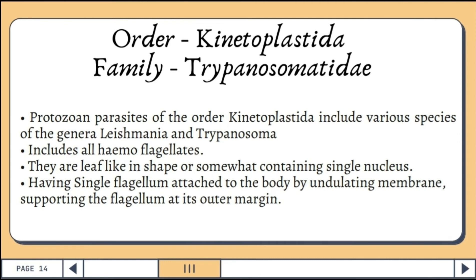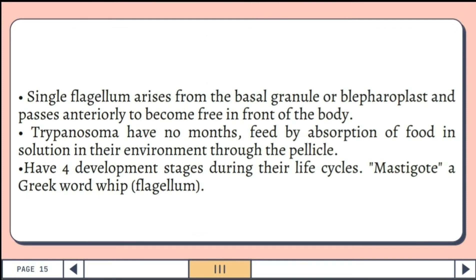Protozoan parasites of the order Kinetoplastida include various species of the genera Leishmania and Trypanosoma. They include all hemoflagellates and are leaf-like in shape, containing a single nucleus. They have a single flagellum attached to the body by an undulating membrane. The single flagellum arises from the basal granule and passes anteriorly to become free in front of the body. The kinetoplast is posterior to the basal granule, and trypanosomes feed by absorption through the pellicle.